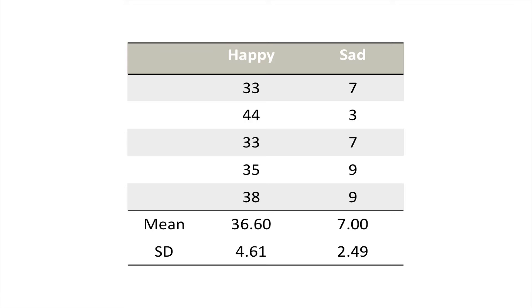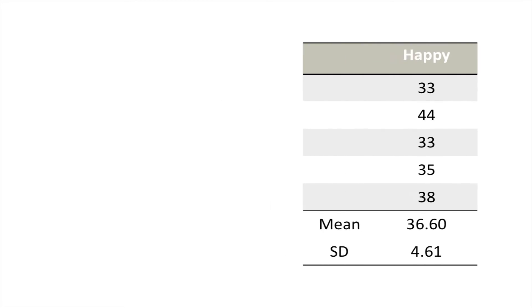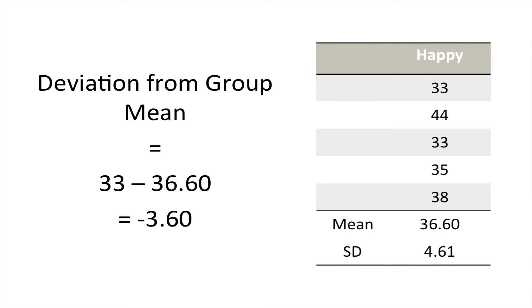I'm just going to take away one of these groups and focus on one group for a minute. What we want to do first is work out the disparity between each individual score and that group's mean. If we look at the first example, the mean is 36.6 and the score is 33, so we've got a residual of 3.6.